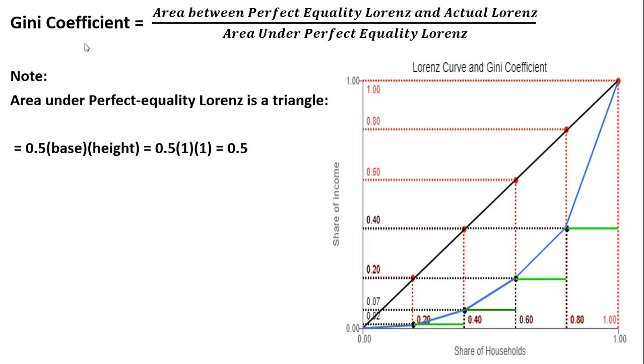So first the formula: the Gini coefficient is the area between the perfect equality Lorenz and the actual Lorenz curve, divided by the area under the perfect equality Lorenz curve.